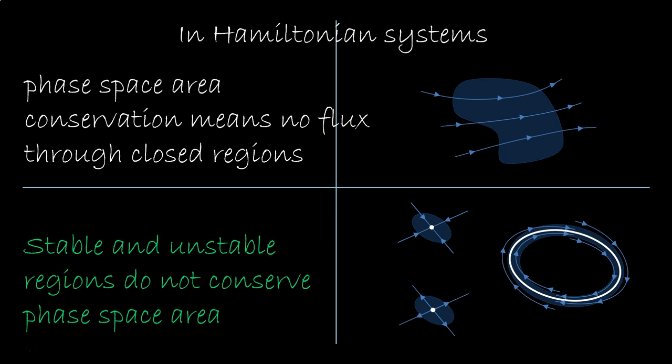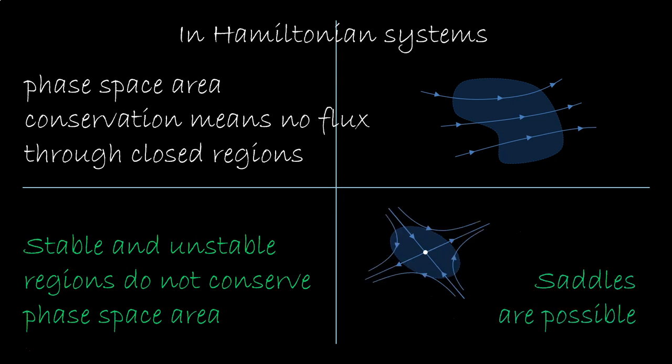Does this mean you can't have a fixed region? No, you can. For example, you can have a saddle, as long as the shrink in one direction is balanced by the stretch in the other, so that the whole area remains the same. So let's look at a particular example.